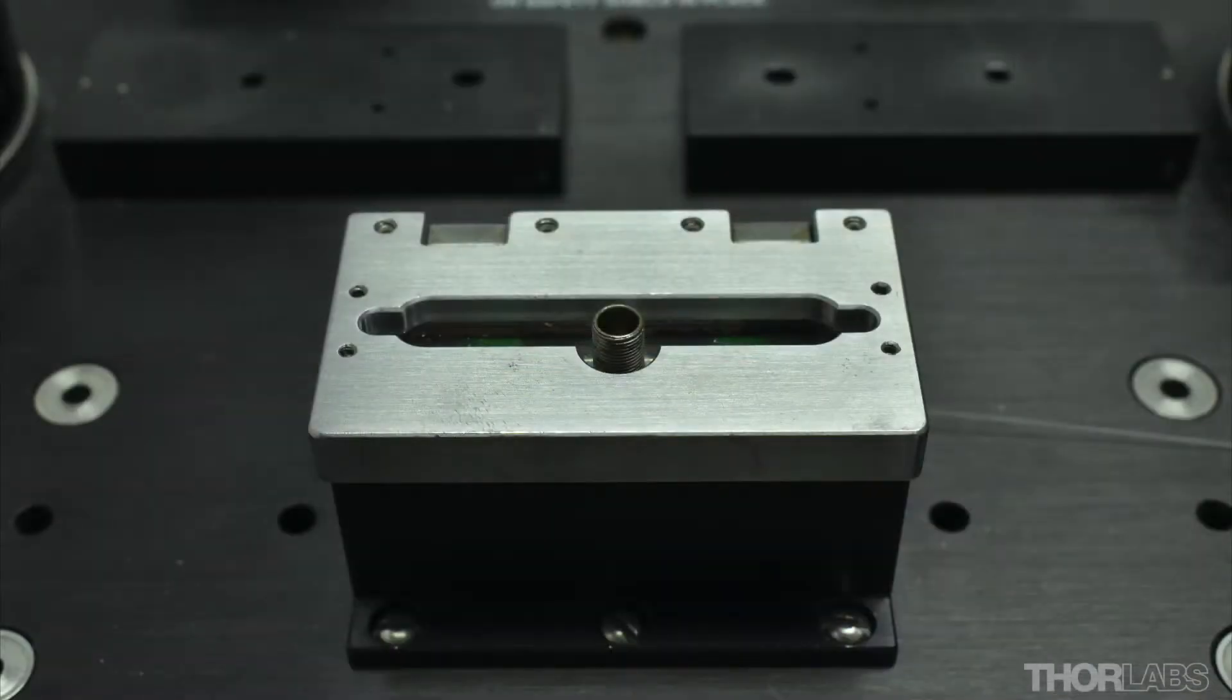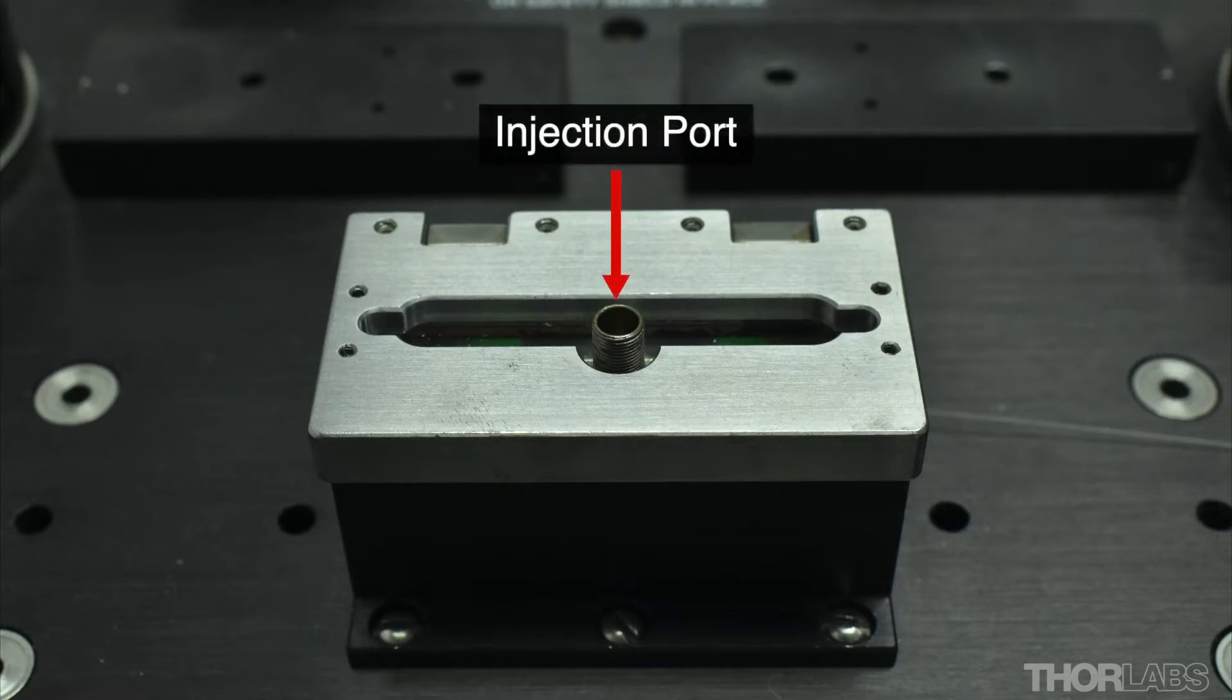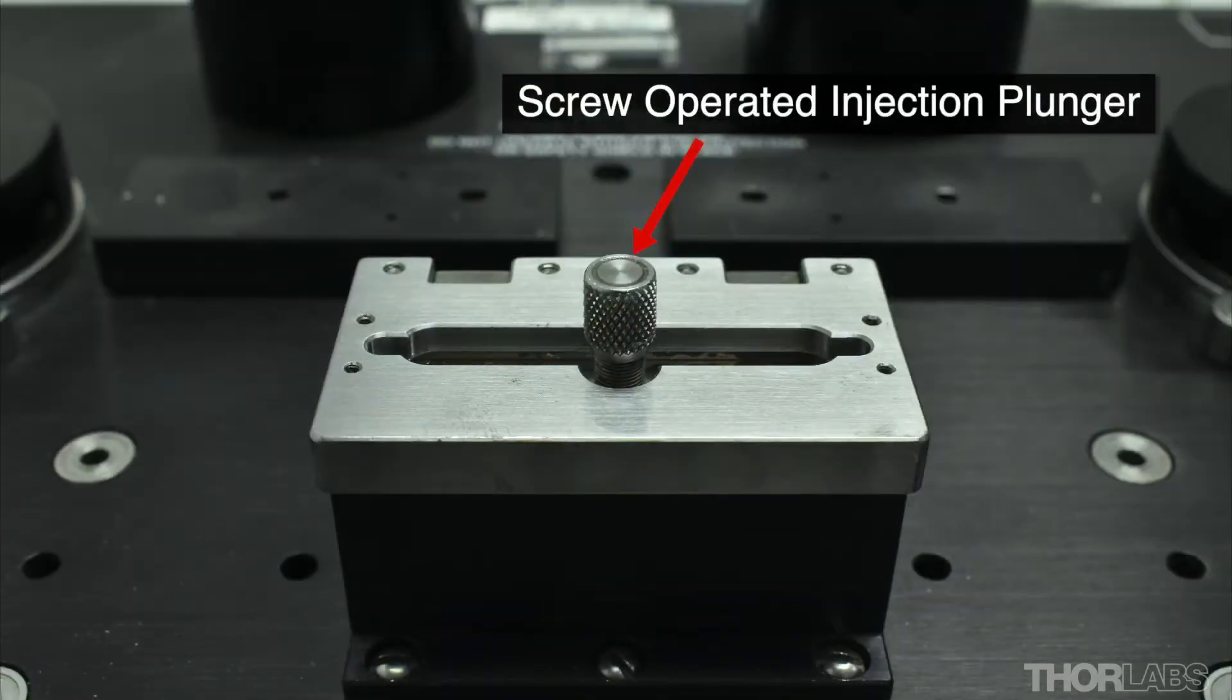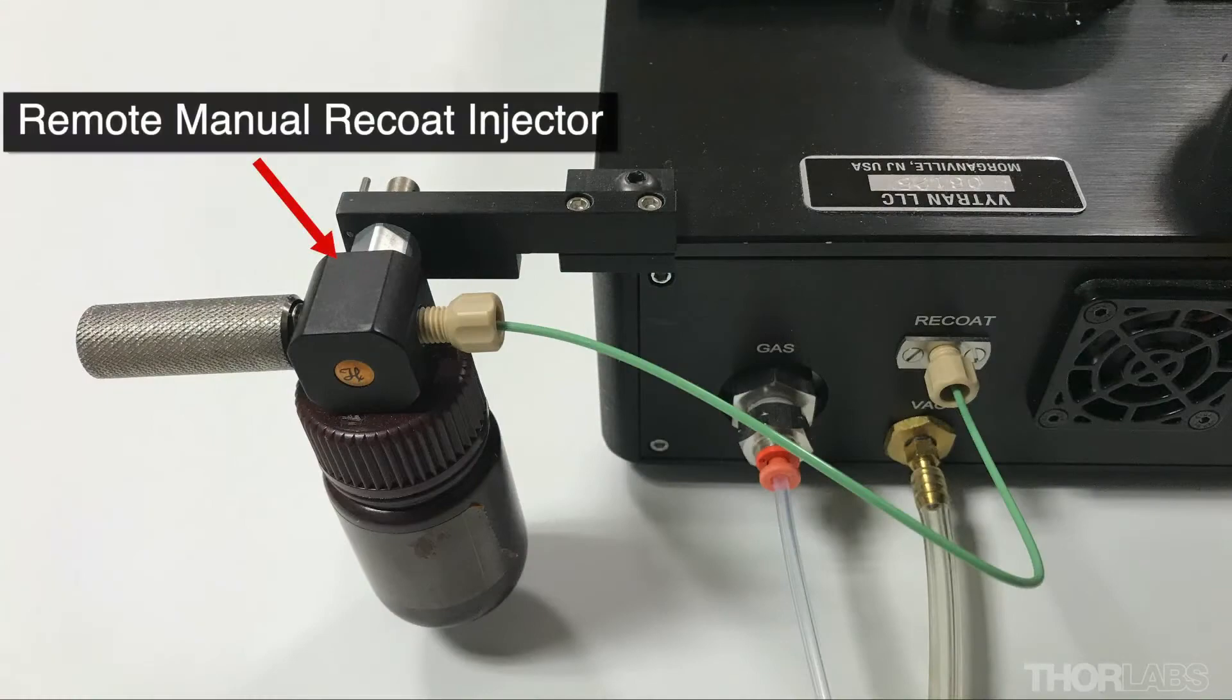The acrylate recoat material enters the mold via the injection port in the lid. The port is loaded with recoat material and this is then injected into the mold using either the injection screw plunger or a remote manual injection system.